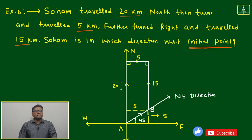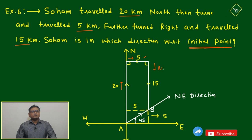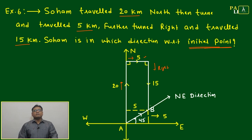Soham is going toward north 20 kilometers, then turned right 5 kilometers, again turned right and traveled 15 kilometers. Try to visualize: this is 20, this is 15, then this will be 5.